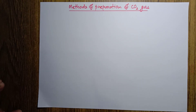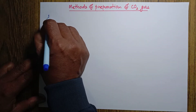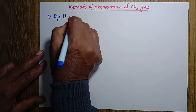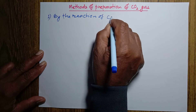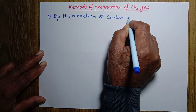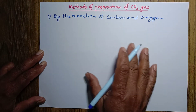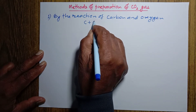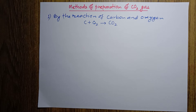There are many methods of preparation of carbon dioxide gas, but among them few are very important. Number one: the first method of preparation of carbon dioxide gas is by the reaction of carbon and oxygen. When carbon reacts with oxygen, they form carbon dioxide gas. This is one of the methods of preparation of carbon dioxide gas.